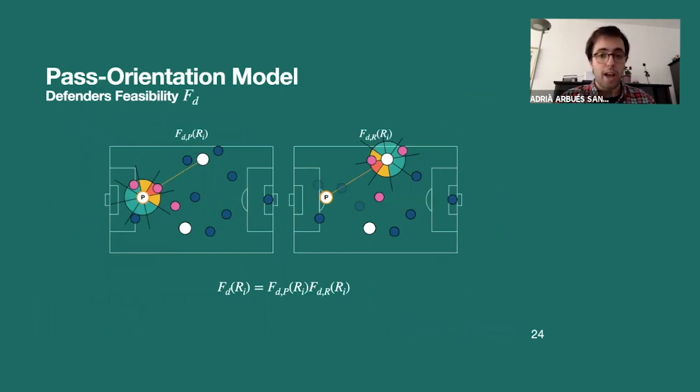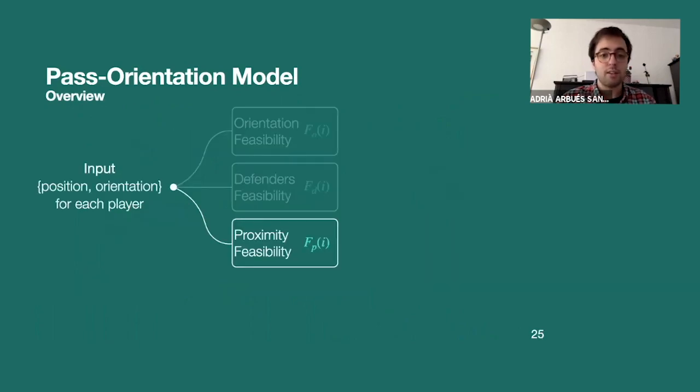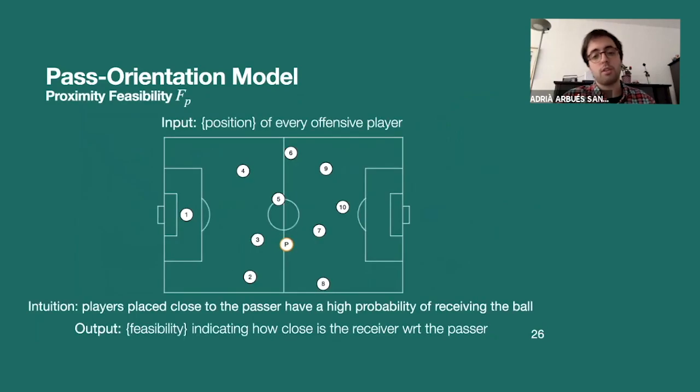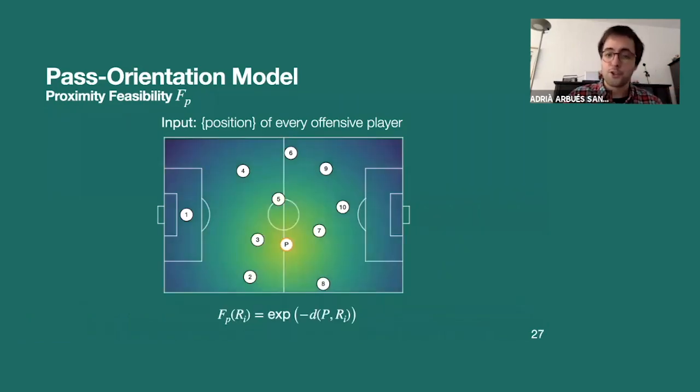And once we have them, we can combine them. Since they are independent, we can use a straightforward product. And then we'll have a measure that indicates the feasibility in terms of defensive pressure. And finally, we have proximity feasibility. This is super simple. It's according to the prior that players that are close to the passer have higher chances of receiving the ball than the ones that are far away. And just by computing a Gaussian, placing the center of this Gaussian in the position of the passer, we can obtain this feasibility measure for each player in the field.